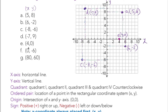Next is point F at (0, -6). X is zero so x is at the center, and y goes down 6, which is negative 6. So F is at (0, -6) on the y-axis. We have now plotted points A through F. Key rule: if x is zero, the point is on the y-axis; if y is zero, the point is on the x-axis.